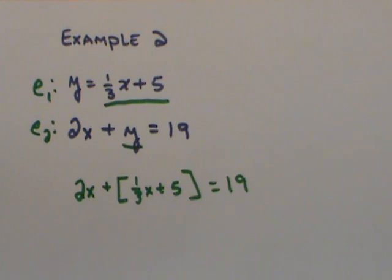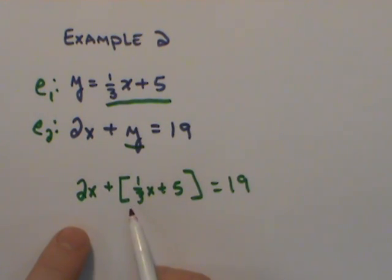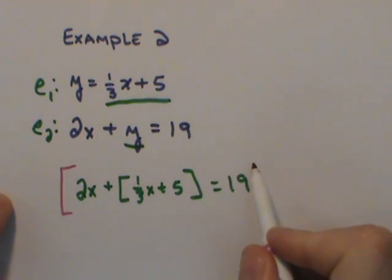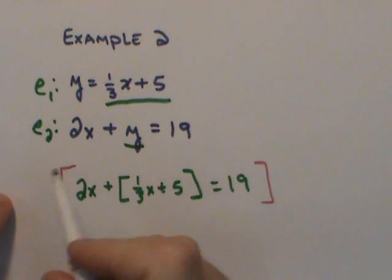I have one equation with one unknown right here. And so I notice that there's a fraction there. I'm not a real big fan of working with the fractions, so I think I'm going to get rid of the fraction from the get-go. I'm going to multiply everything by three.